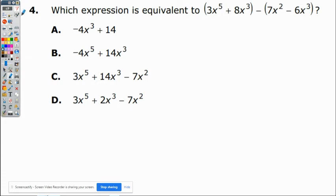This is an Algebra 1 sample question number 4. For this question it says, which expression is equivalent to (3x⁵ + 8x³) - (7x² - 6x³)?